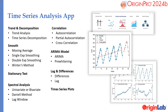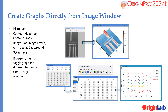The Time Series app is a toolbox for analyzing time series data. Origin 2024b also introduces a plot menu for the image window — no need to convert image to matrix data.